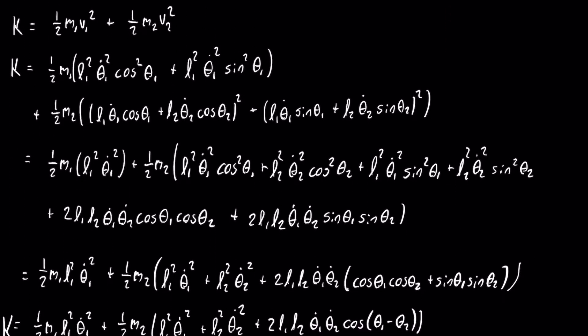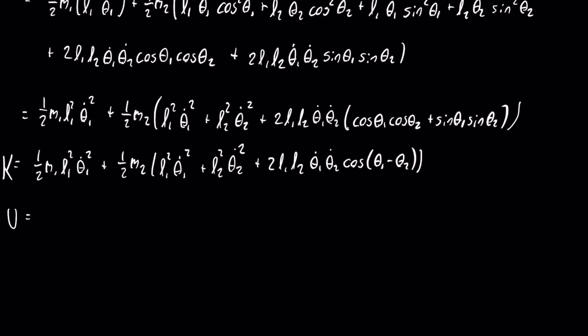The zero point for our gravitational potential energy is going to be the ceiling, so it will always be negative. That negative comes from the Y1 and Y2, but I'm just going to carry that to the front. After doing that, we get that this is our gravitational potential energy, and thus all of our potential energy.